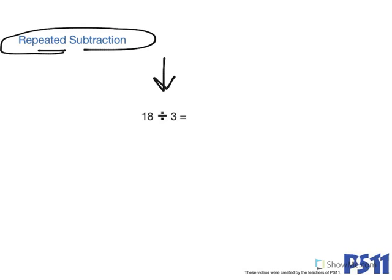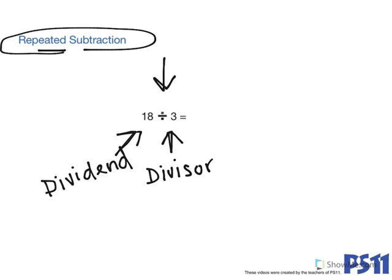So let's take a look at the problem below. When I look at this problem, I see that the number being divided is 18, and we call that the dividend. And I see that 18 is being divided by 3. We call 3 the divisor. So in this equation, I was given the dividend and divisor, and I am solving for the quotient.